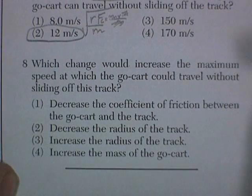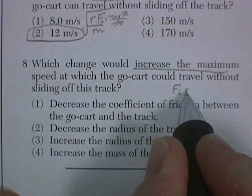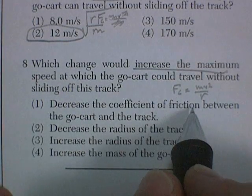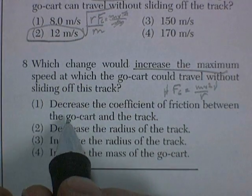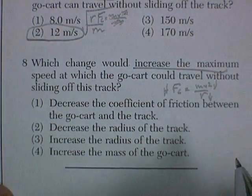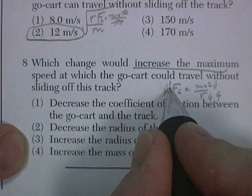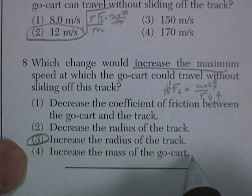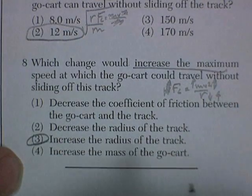The last question. Which change would increase the maximum speed? So what would cause a larger centripetal force without sliding off the track? Decrease the coefficient of friction. Now that wouldn't work. That would have, if you reduce this, you'd have to reduce your speed. You hit ice, you better slow down. Decrease the radius. If this goes down, then the force necessary would go up. That wouldn't help. Increase the radius. If the radius went up, then the force necessary would go down. And if the force went down, you could compensate by having a little bit more velocity. I think this is going to do it. Increase the mass of the go-kart. No. No, that would increase the mass, increase the force needed. And that wouldn't help. So it's choice three.